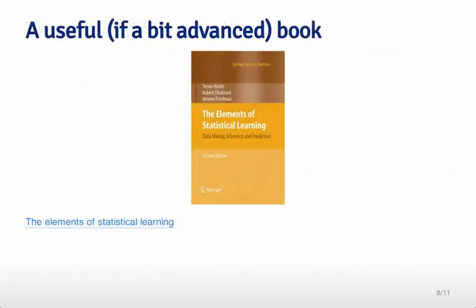This is a book that I find very useful — it's a little advanced for this class, although a lot of the tools are incredibly useful. It's called The Elements of Statistical Learning. You can get a free copy of the PDF from the authors' website, which is very nice, but if you really like the book I encourage you to buy it as well. The authors put a lot of effort into it and it's a great book with a lot of information covering what we'll discuss in this class.